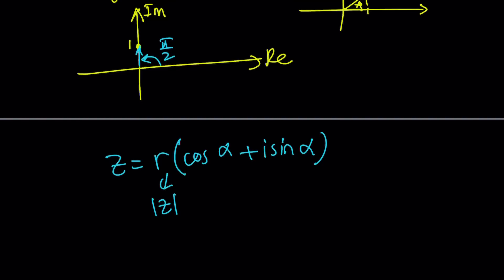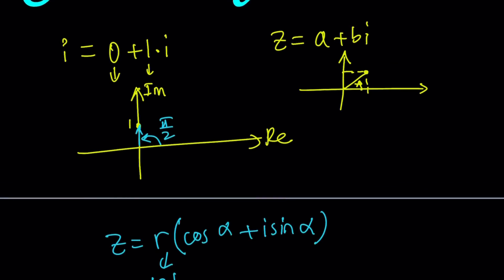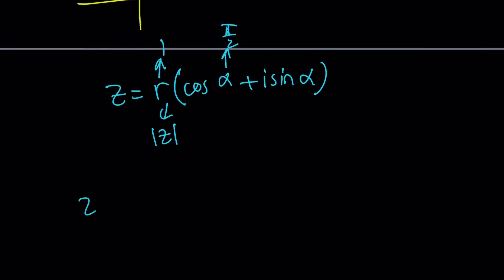In this case, since our number is one unit away from zero, its modulus is one, so we don't have to write it. And the alpha is going to be pi over 2 in our case. So our number is going to be fairly simple. i can be written as 1 times cosine pi over 2 plus i sine pi over 2.